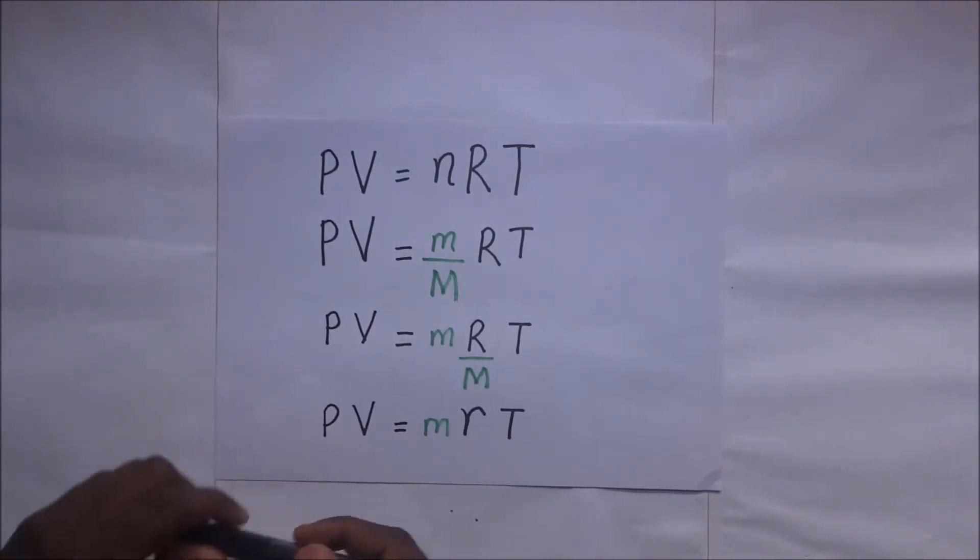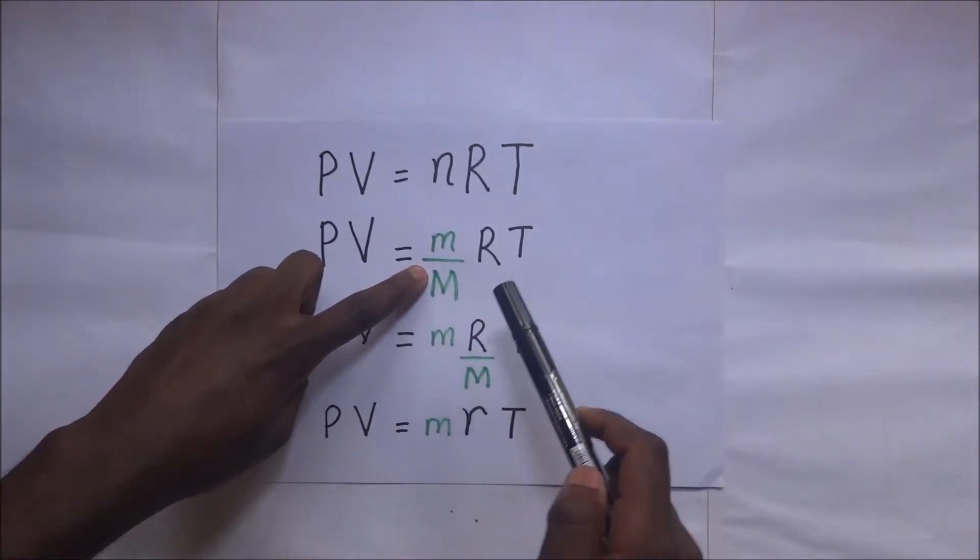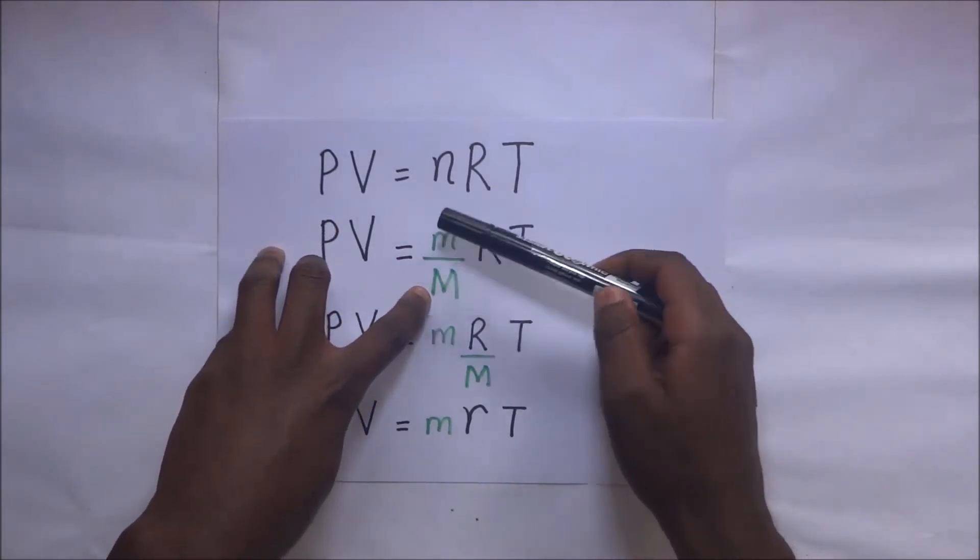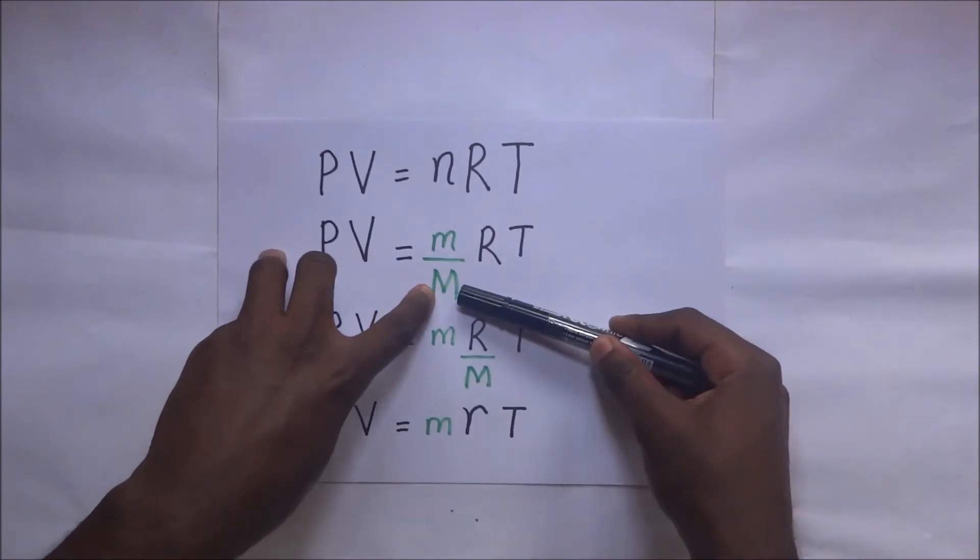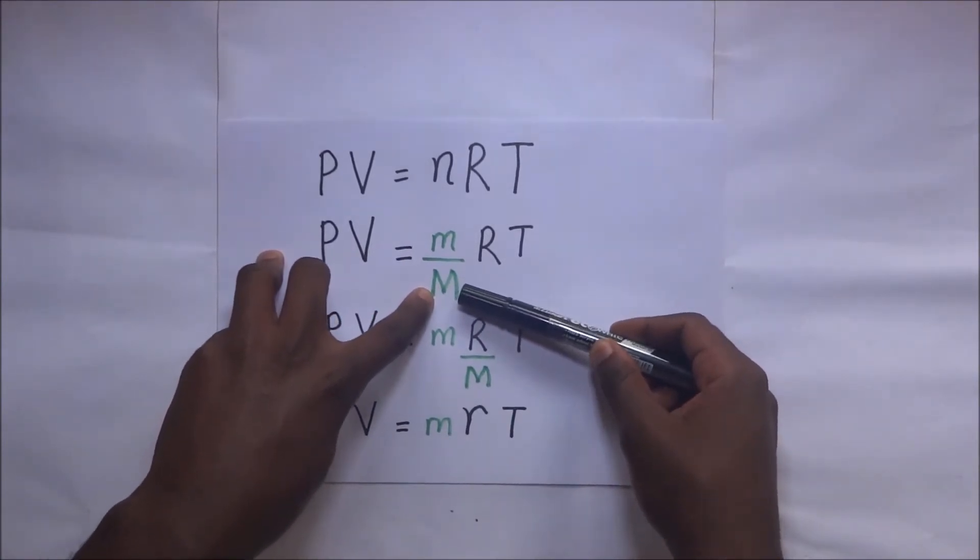Breaking it down, PV equals n, where n is the number of moles. The formula for the number of moles is m over M, where m is the mass of the substance divided by M, the relative molecular mass of that gas.